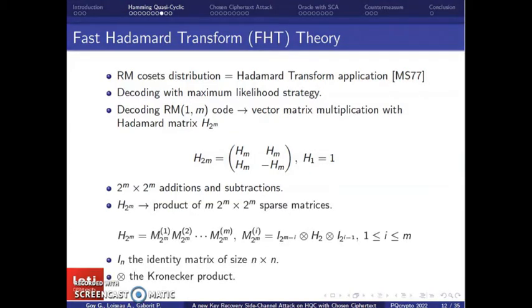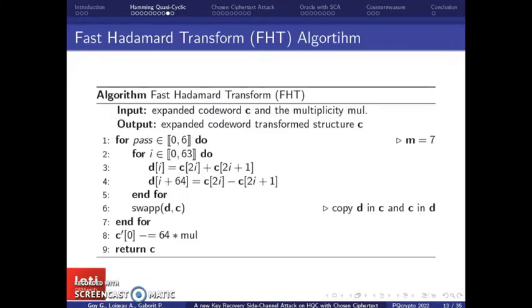This function takes as inputs the codeword with multiplicity and adds together the duplicated elements. As a result, each cell of the new array contains a value from 0 to the multiplicity. We stress that this function is not a binary addition. We'll see later that this function can create some particularities that we must consider. After the ExponentSum function, we end up with a Reed-Muller codeword with multiplicity. McWilliams and Sloan showed that applying the Hadamard transform to a Reed-Muller codeword is equivalent to find the coset distribution of this codeword. This leads to decoding with a maximum likelihood strategy.